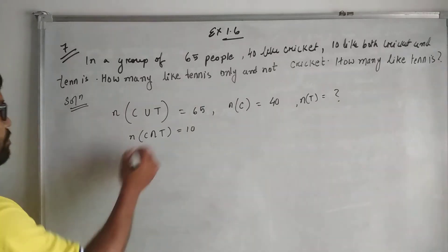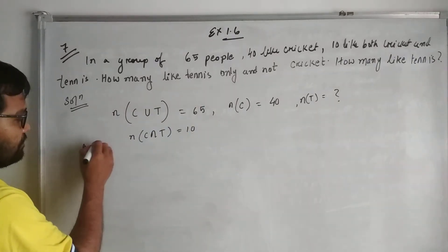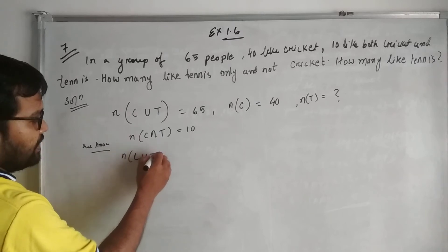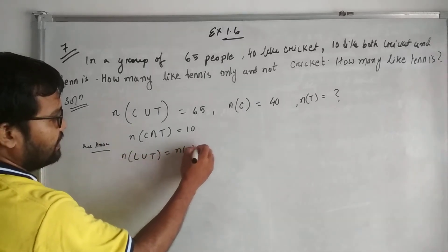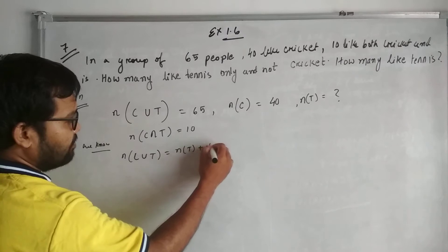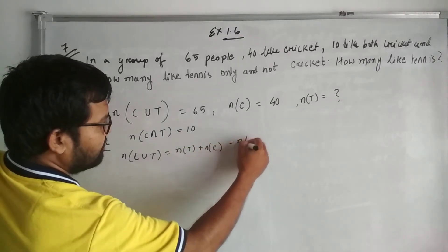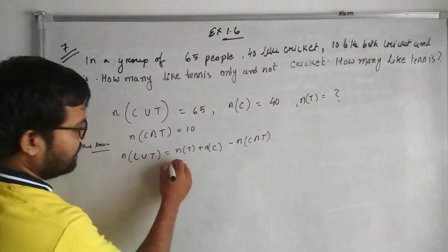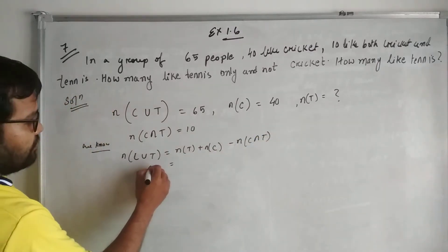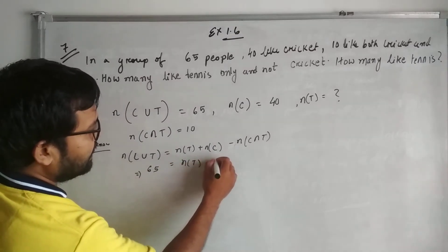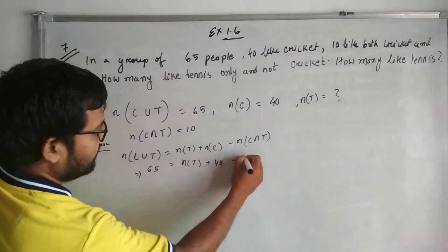Clear? The simple part here. We know n(C∪T) = n(T) + n(C) - n(C∩T). That means 65 = n(T) + 40 - 10. T we don't know, we need to find it out.